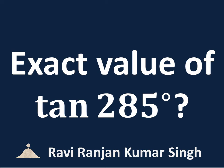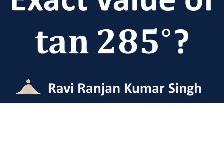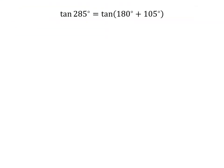In this video, we will learn to find the exact value of tangent of 285 degrees. 285 degrees is equal to 180 degrees plus 105 degrees. So, tangent of 285 degrees is equal to tangent of 180 degrees plus 105 degrees.